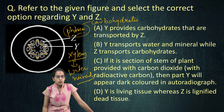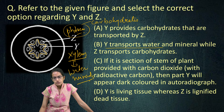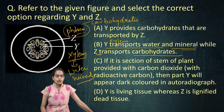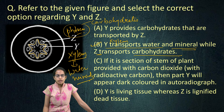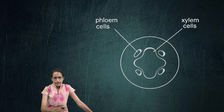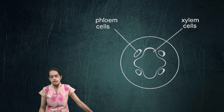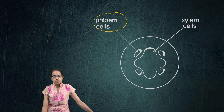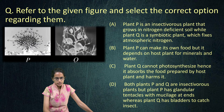So xylem is the one which conducts water and minerals. Z is phloem which transports carbohydrates, so option B is the right answer. We can also see another clear cross-section showing phloem cells on the outside and xylem cells on the inside.